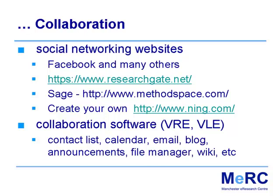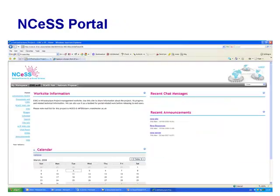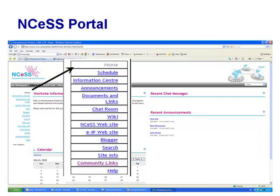There's also specific collaboration software called virtual research environments or virtual learning environments — Blackboard is an example of the latter. These contain a whole set of tools. We've set one up at NCeSS using Sakai, an open source virtual environment. It's a bit like Blackboard — there's a huge range of tools you can use, and the first thing you do is say which tools you want. You can set up different subsites with different tools. Once you say I want to use a tool, it's there — wiki works like any other wiki, chat room works like any other chat room. You can get in and up and running in no time whatsoever.